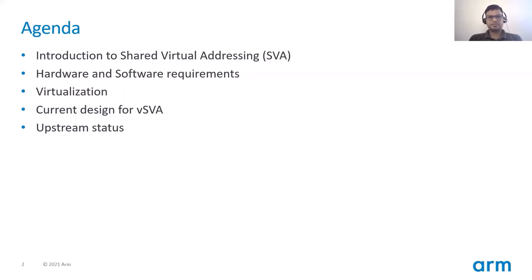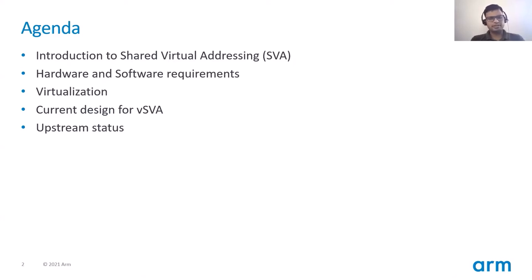Here's a brief outline of my talk. I'll first introduce Shared Virtual Addressing, then we'll talk about the hardware and software requirements in order to implement SVA. We'll then go into the virtualization use case, as virtualization is one of the key enabling technologies on various infrastructure platforms. Then we'll talk about the current design as proposed by patches posted to the mailing list, and we'll briefly cover the upstream status.